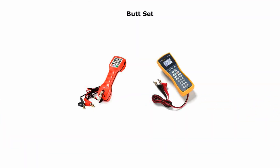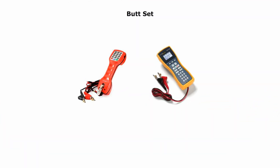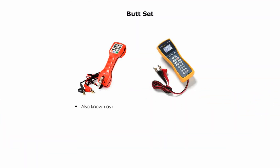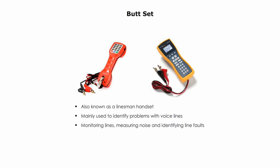I start with Budset. Budset is also known as Linesman's handset. It is mainly used to identify problems with voice lines. It can be used for monitoring lines, measuring noise, and identifying line faults.